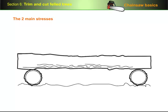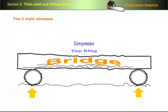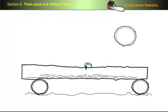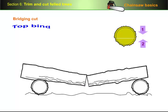The top of this log is in compression because it's supported at each end, and forms a bridge between the two supports. Some people call this a top bind, and the cut a bridging cut. The best way to do a bridging cut on a log with a top bind is to cut down as far as you can before it begins to pinch the bar, and then cut from the bottom up until the two cuts meet.